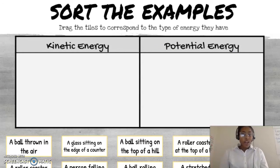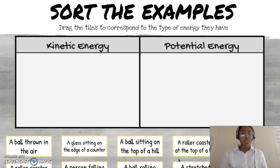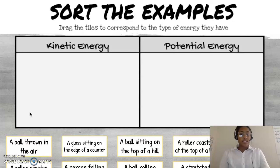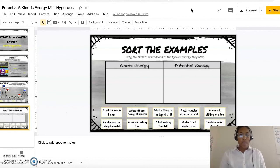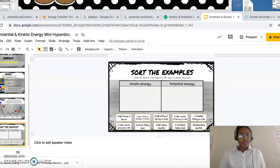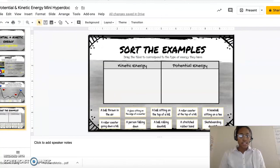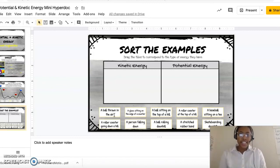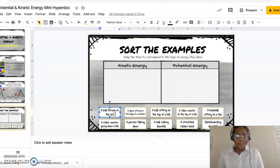Here we're going to sort the examples — you're going to drag these titles to correspond to the type of energy that they have. Obviously I know this is a video so you can't drag them, but I will drag them for us and discuss whether each one is correct. So we have: a ball thrown in the air — is that an example of potential or kinetic energy? I would say it's definitely kinetic energy.